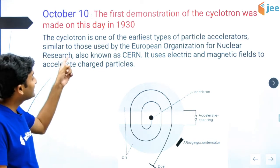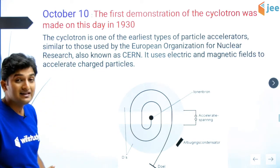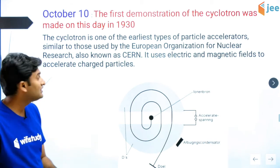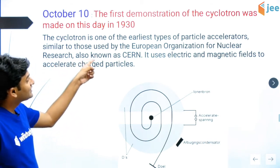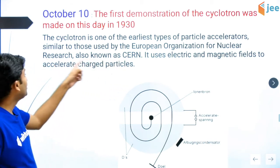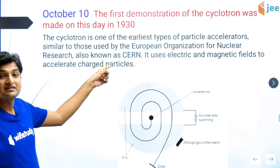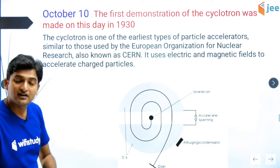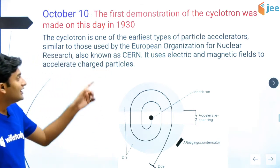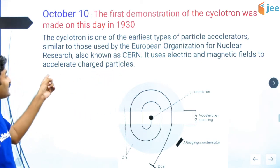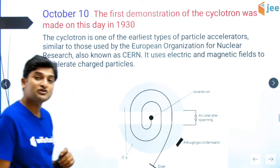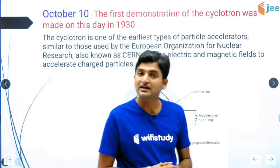This cyclotron is one of the earliest types of particle accelerators, similar to those used by the European Organization for Nuclear Research, also known as CERN. It uses electric and magnetic fields to accelerate charged particles.